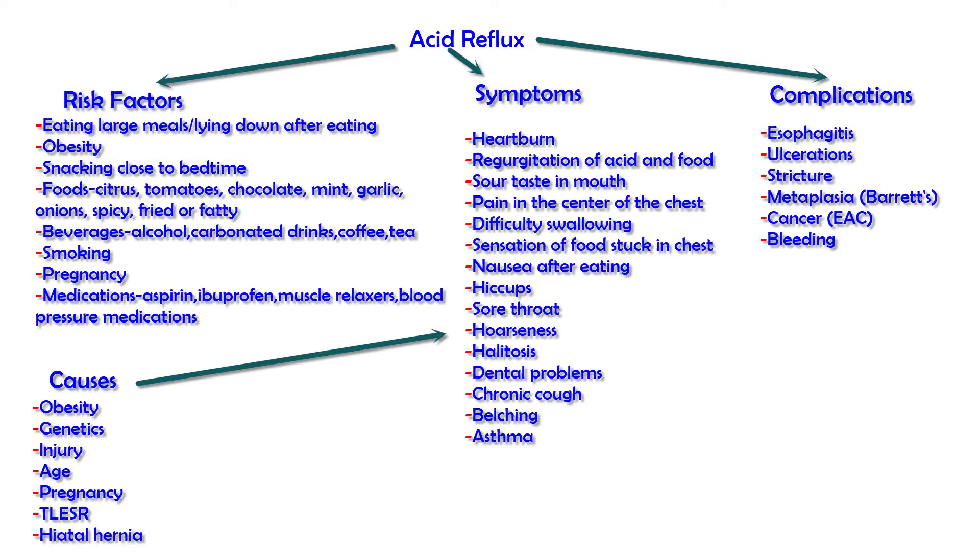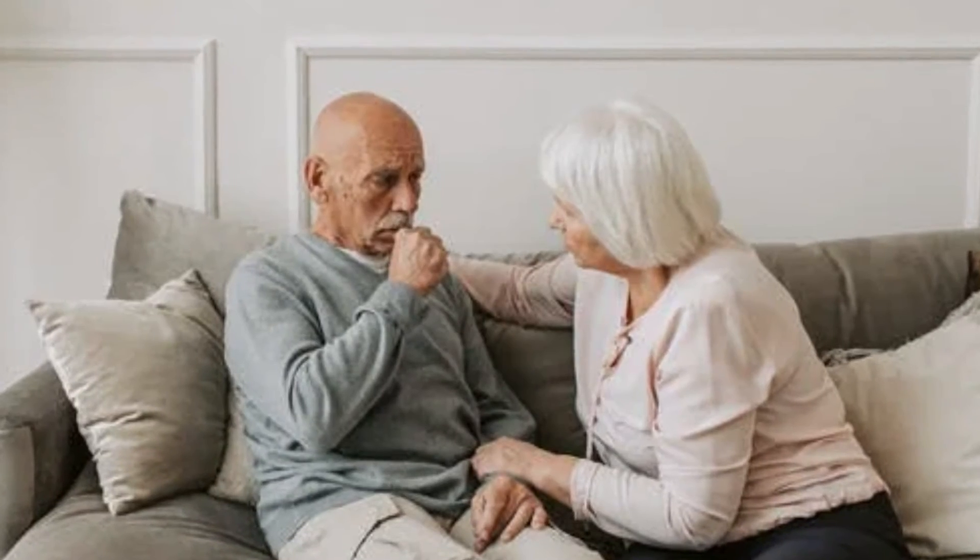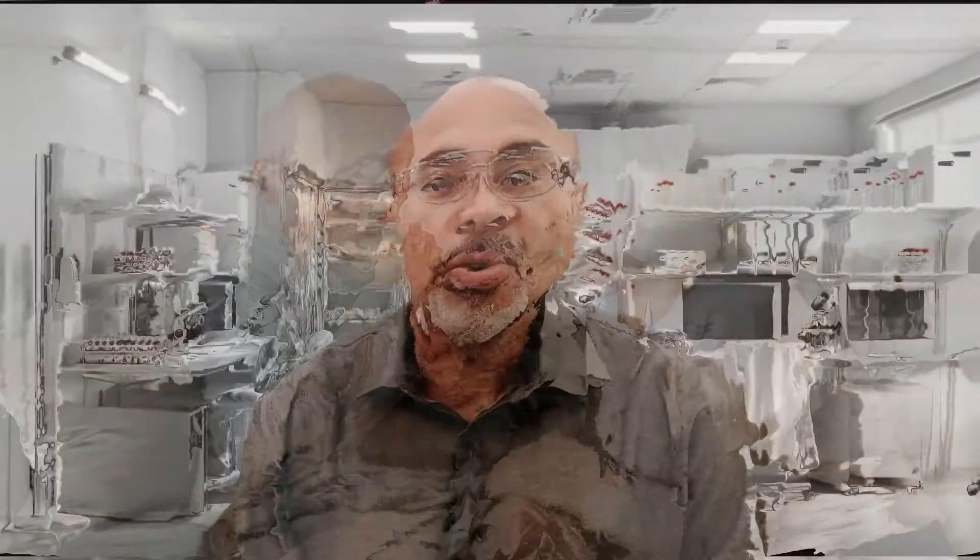Another frequent cause is inappropriate lower esophageal sphincter relaxations. Normally the sphincter relaxes to allow food to pass into the stomach, but in acid reflux sufferers it relaxes inappropriately when no food is in transit, allowing food and acid to back up into the esophagus. Age is also a factor — the older we get, the more likely the lower esophageal sphincter is to malfunction and lead to GERD.